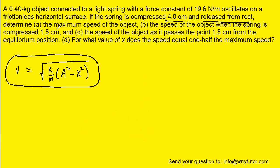So for example in Part A we're being asked to find the maximum speed of the object. Well the maximum speed of the object will occur when the spring is not compressed at all. That means that x is going to equal 0 meters, so we're going to substitute that in for x.